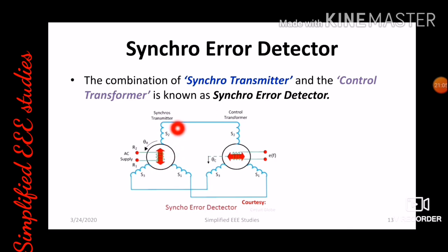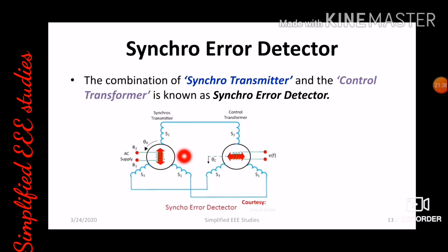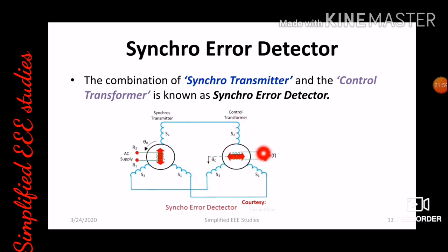Consider the synchro transmitter side. You provide continuous AC supply to the rotor winding. As a result, rotor current flows through the rotor winding. Because of this rotor current, a magnetic field is generated in the surrounding region. This magnetic flux directly links with the stator winding of the synchro transmitter. As a result, induced EMF is generated at the stator winding. This induced EMF directly reaches the control transformer, so the control transformer receives its supply from the synchro transmitter.